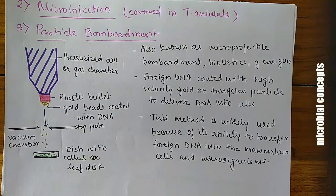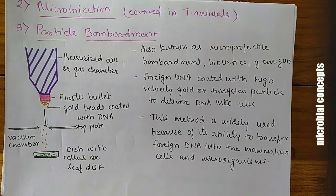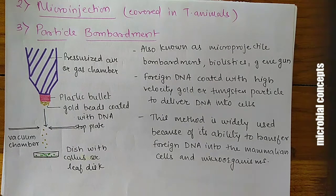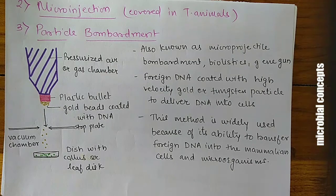In the gene gun diagram, a pressurized gas chamber propels a plastic bullet to which gold beads coated with DNA are attached. These particles are fired into a dish containing callus or leaf cells inside a vacuum chamber.